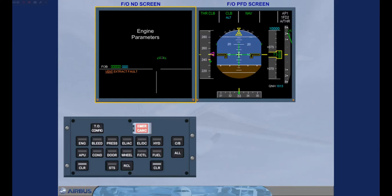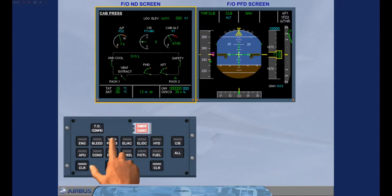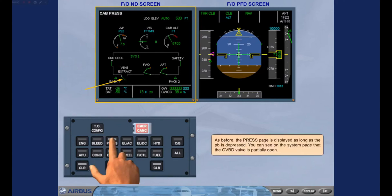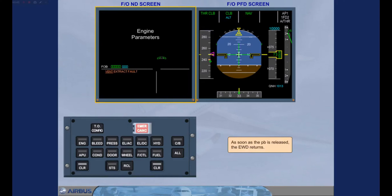As before, the PRESS page is displayed as long as the push button is depressed. You can see on the system page that the overboard valve is partially open. As soon as the push button is released, the engine warning display returns.